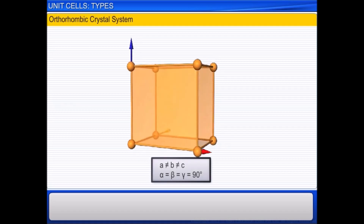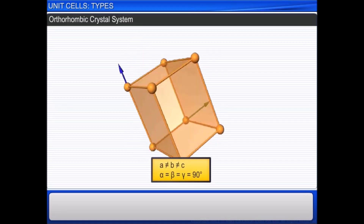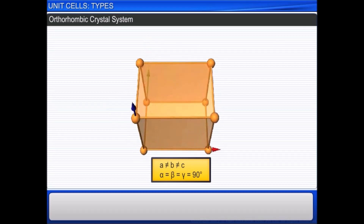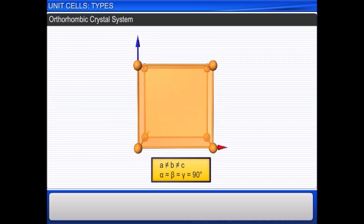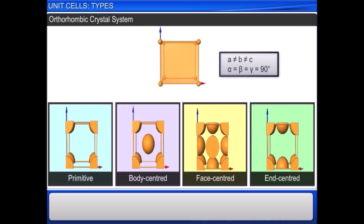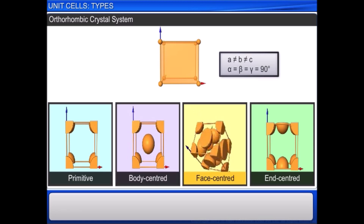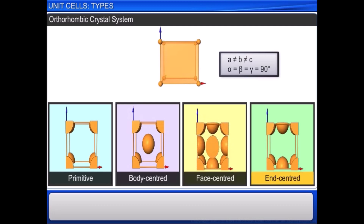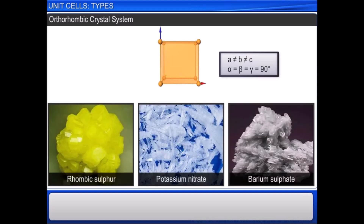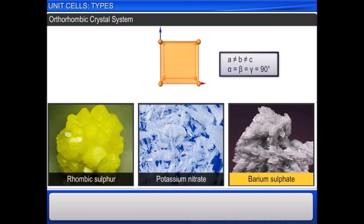In an orthorhombic crystal system, the three axes are unequal, but all axes are at right angles to each other. The possible lattices are primitive, body centered, face centered, and end centered. Rhombic sulfur, potassium nitrate, and barium sulfate are examples of this type.